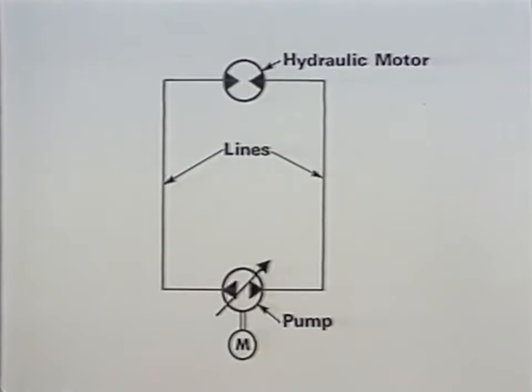A closed circuit consists of a pump and a hydraulic motor that are interconnected with each other via lines. The pump has a variable displacement while the hydraulic motor has a fixed displacement. An electric motor powers the pump.